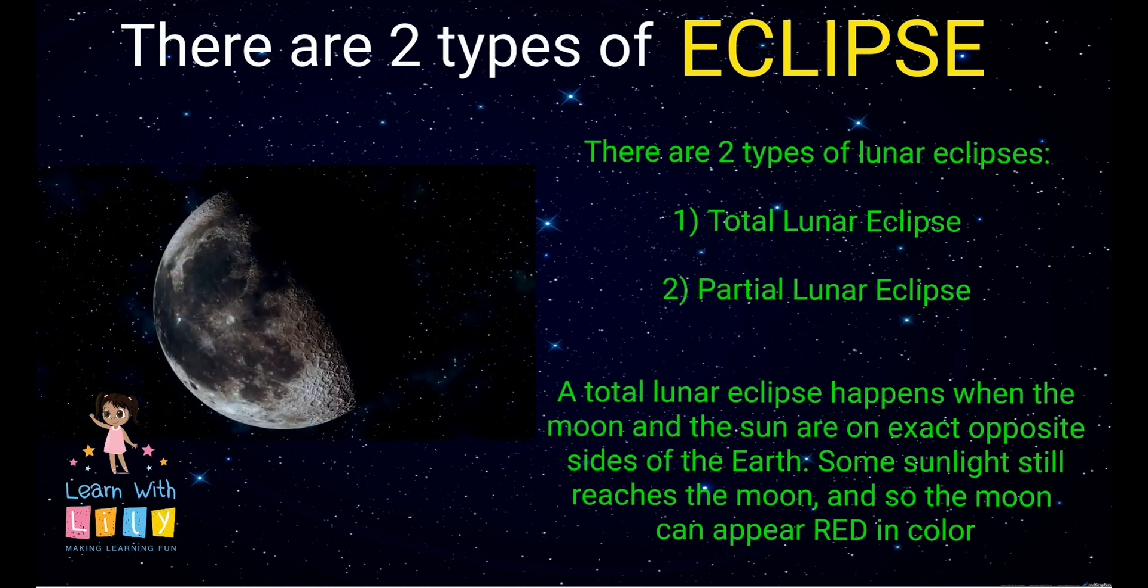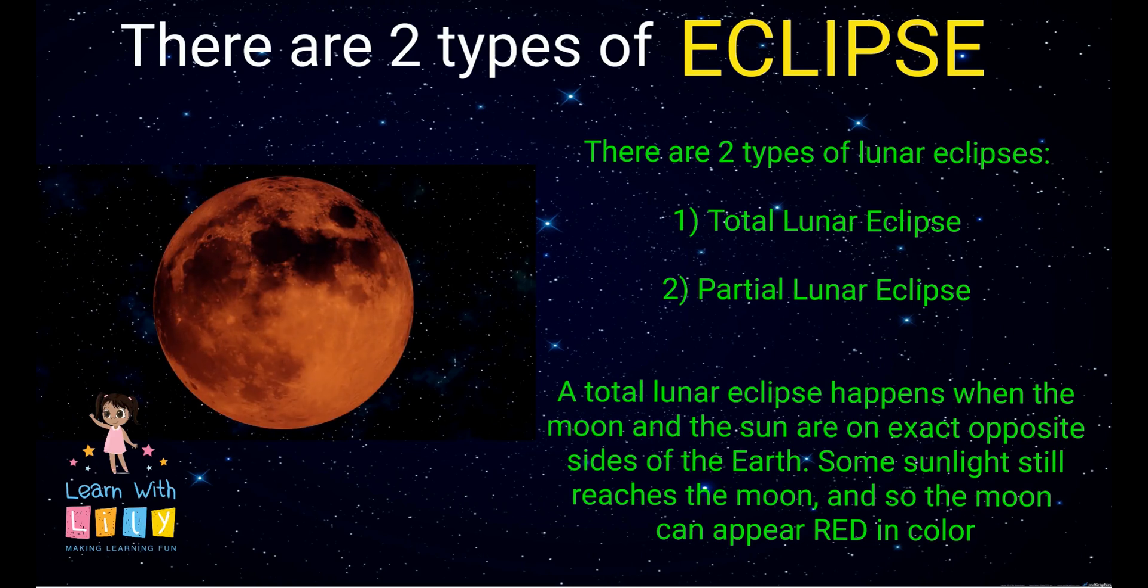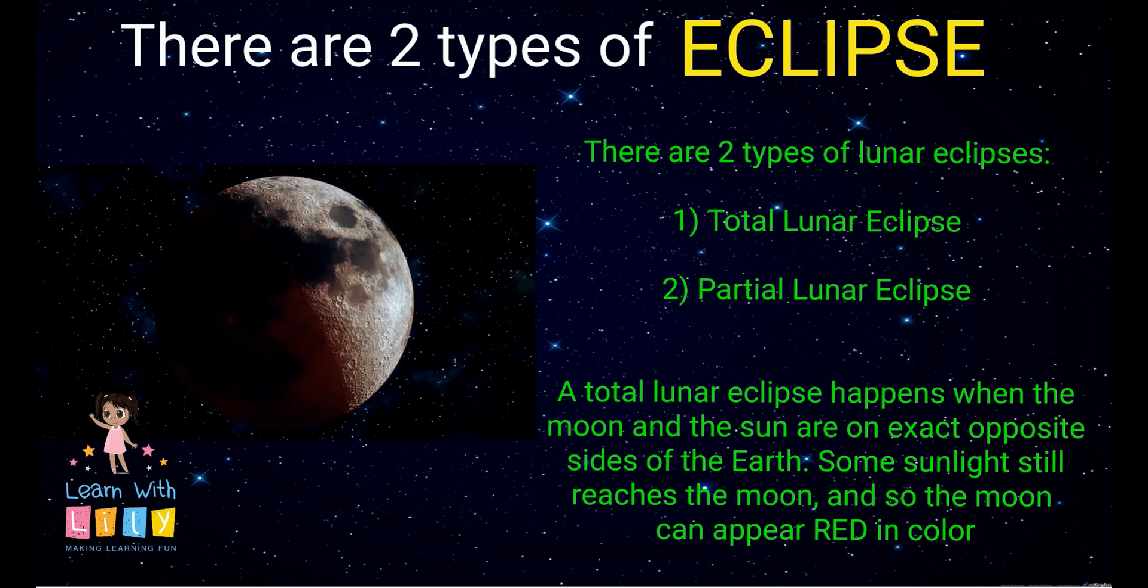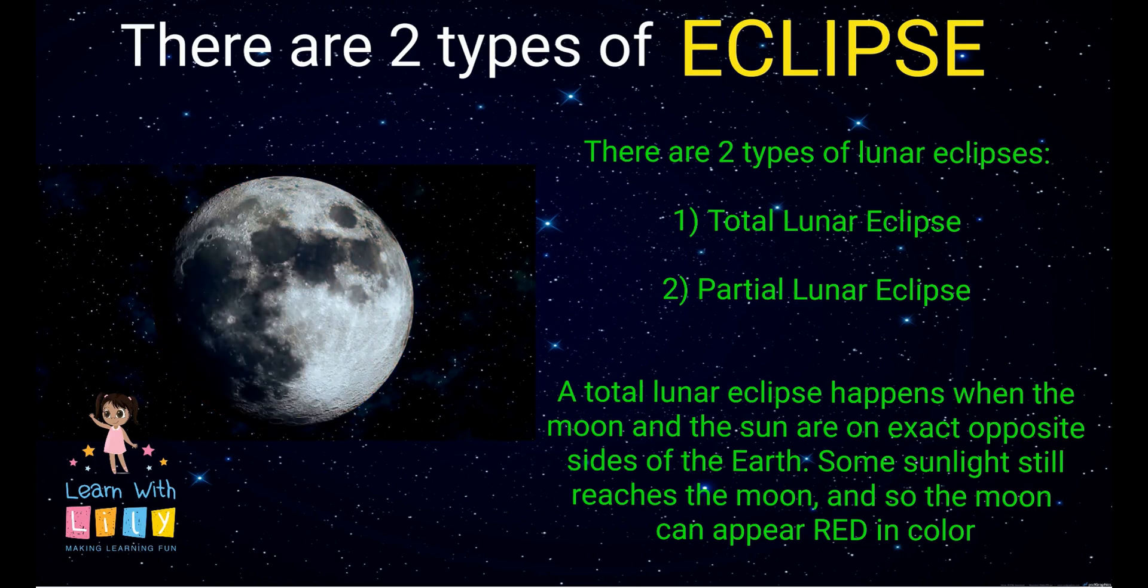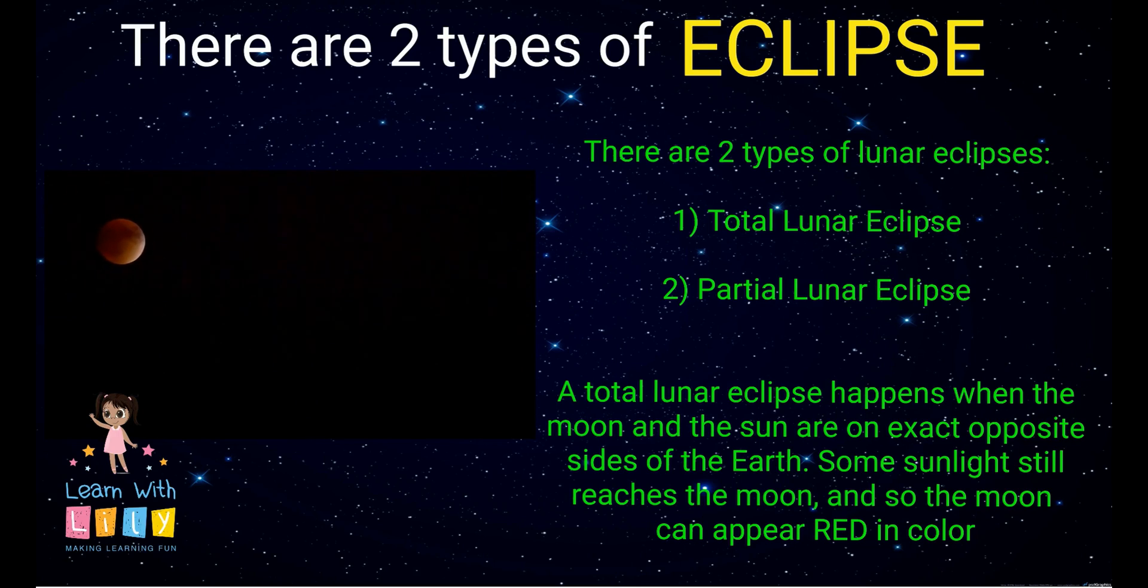There are two types of lunar eclipses: a total lunar eclipse and a partial lunar eclipse. A total lunar eclipse happens when the Moon and the Sun are on exact opposite sides of the Earth. Some sunlight still reaches the Moon and so the Moon can appear red in color.